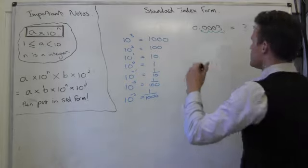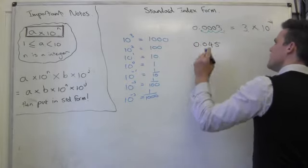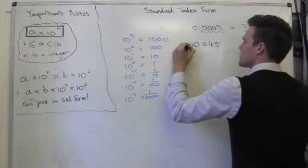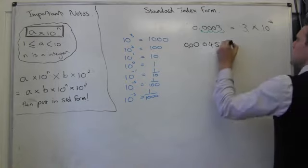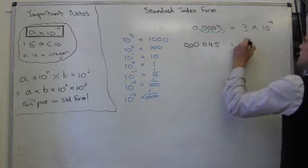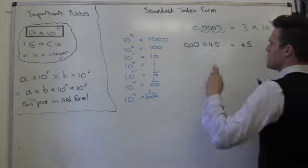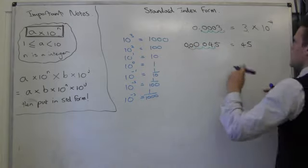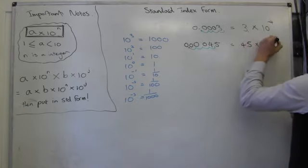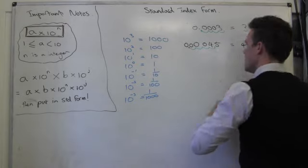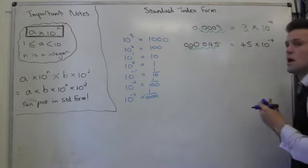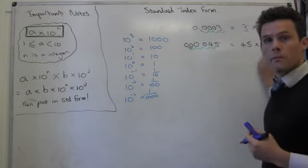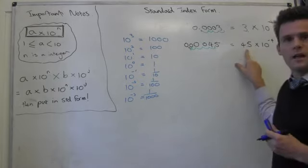Let's do another one: 0.000045. I want to write that in standard index form. Again, I'm just going to write 4.5, put the decimal there, and then check what I have to do: 1, 2, 3, 4 spaces — so that is going to be 4.5 times 10 to the minus 4. The reason it's minus 4 is because I'm hopping the decimal that way — I want to make the number smaller, and 10 to the negative 4 will make my 'a' value get smaller.